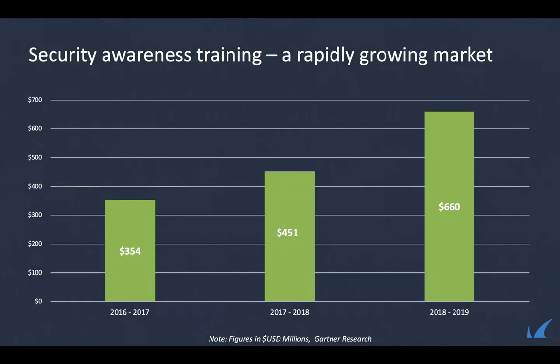Security awareness training is becoming less of a nice-to-have and more of a critical component of any organization's email protection posture. The market reflects this — once valued at $354 million in 2016, the security awareness training market grew to almost $660 million by end of 2019, and more by end of 2021. Gartner predicts this market will be valued at $1.5 billion — almost double — within just a couple of years.